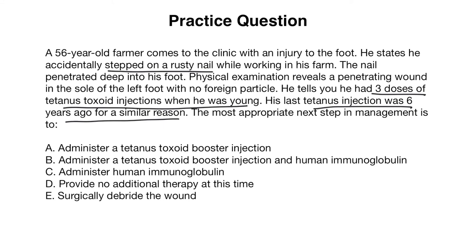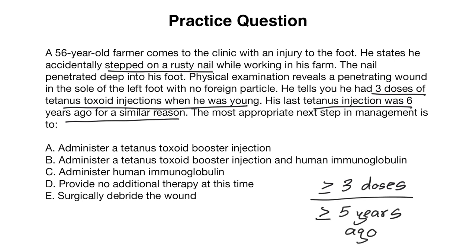So we're being asked: what is the most appropriate next step in management? This patient has a dirty wound, has received at least three doses, and the last injection was six years ago. Given that it was five or more years since the last dose, this patient would receive a tetanus toxoid booster injection — the answer is A. B and C are incorrect because we would not give human immunoglobulin here. D is incorrect because the patient does need a vaccine booster. E is incorrect because surgical debridement is typically done with more chronic wounds like chronic osteomyelitis or necrotizing fasciitis.